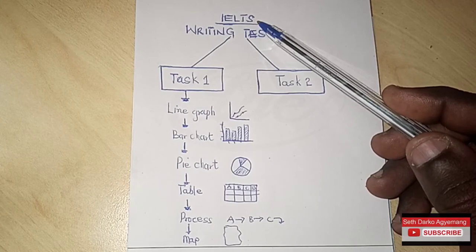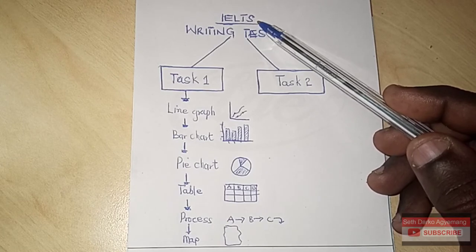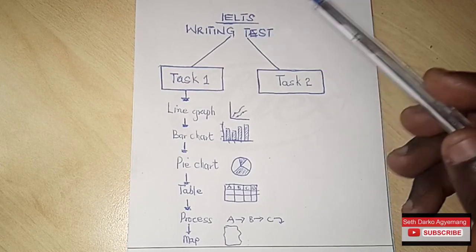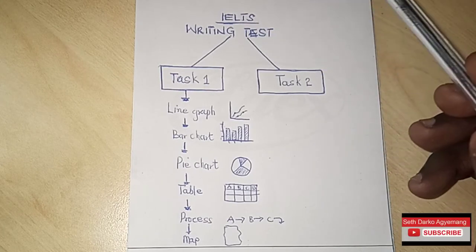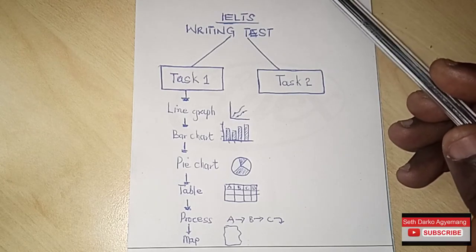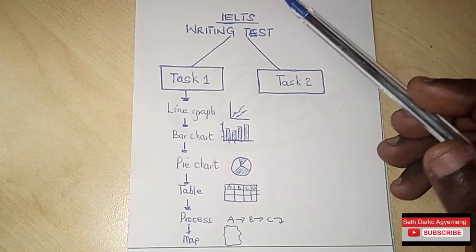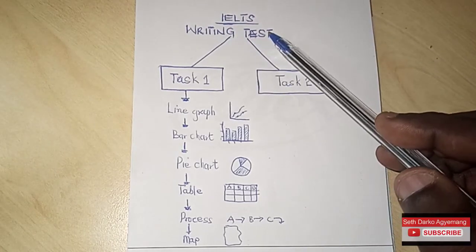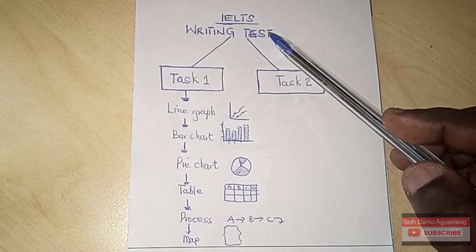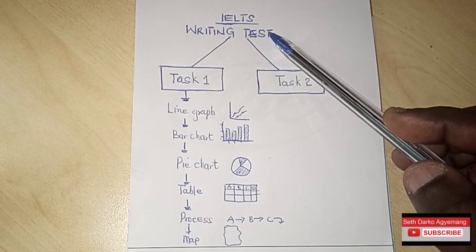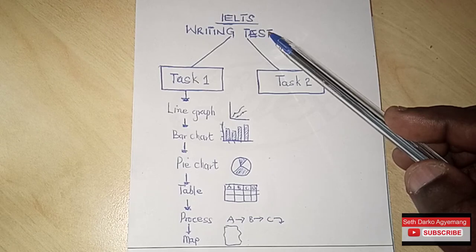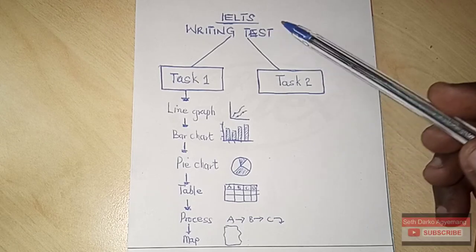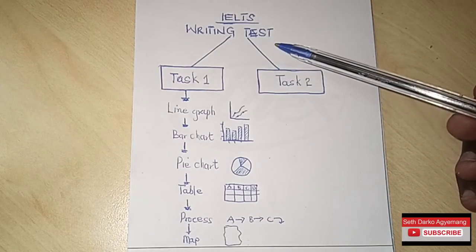When you register for IELTS, you are going to sit for four main tests: the listening test, the reading test, the writing test, and the speaking test. Today I want to concentrate on the writing test. If you're a beginner in IELTS or if you don't really understand the format of the writing test, I'm going to talk about that today.